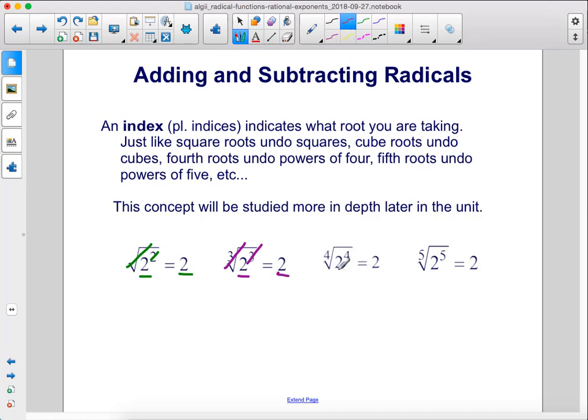The fourth root of 2 to the fourth, well those will cancel and leave us with 2. And the fifth root of 2 to the fifth power, those will cancel as well leaving us with 2.